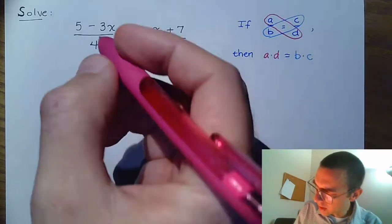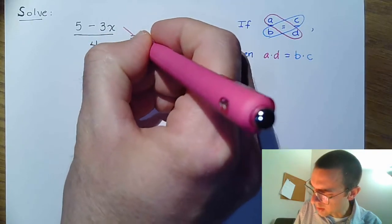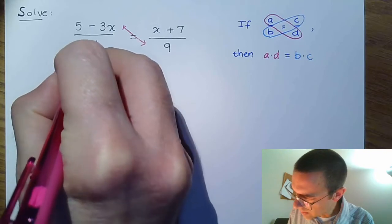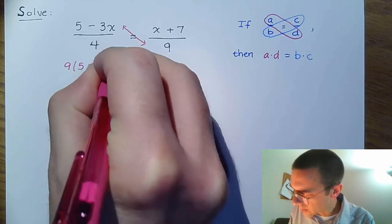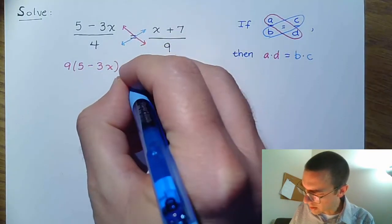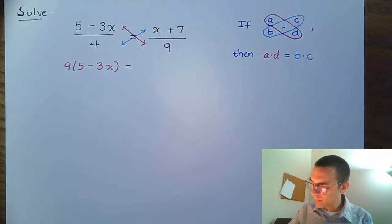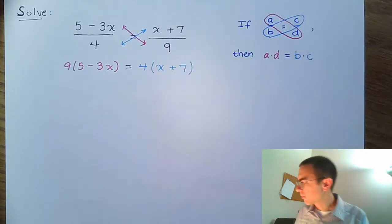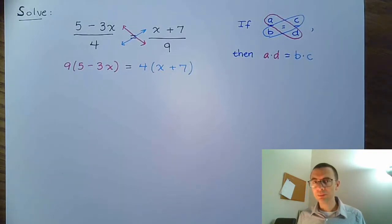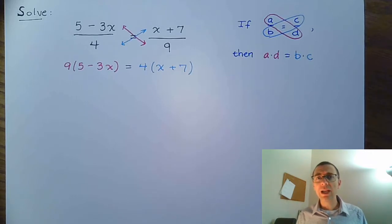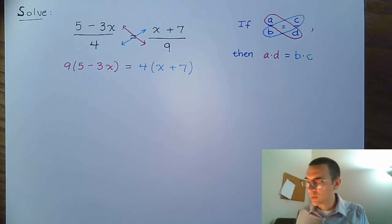Based on what you see here, we're going to look at this cross product, which includes the factors 9 times the quantity 5 minus 3x, and then we have the other cross product, which is 4 times the quantity x plus 7. So very quickly we go from having fractions to not having fractions, and now we just need to multiply out each side and reassess the equation to see what kind of equation we have.